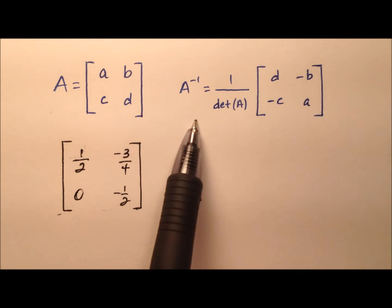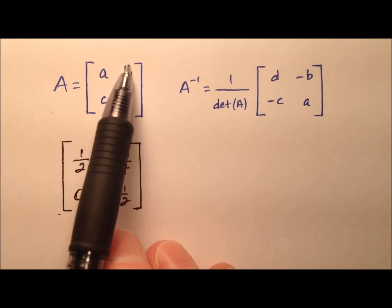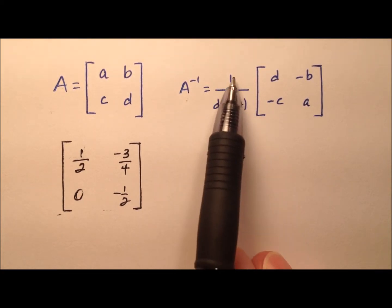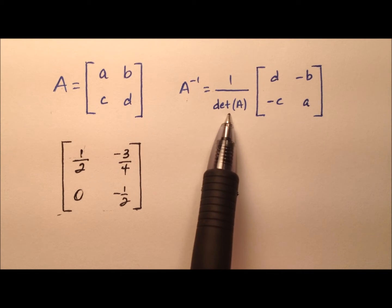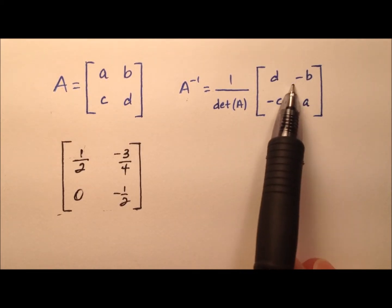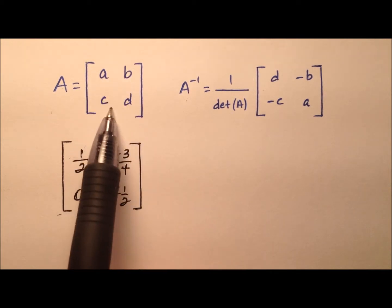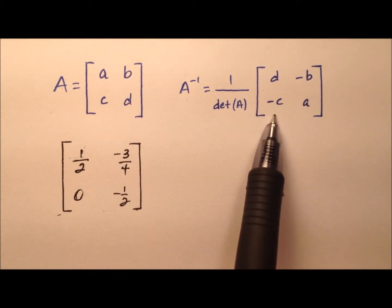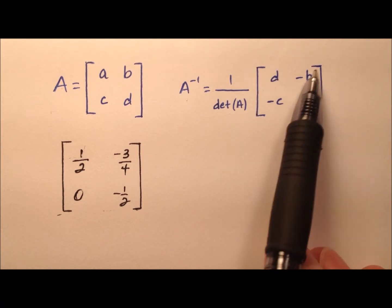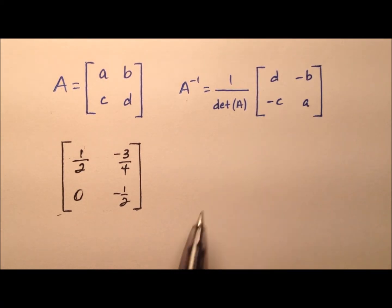In general, when we have some matrix A that's going to be a 2 by 2 square matrix, we can find its inverse, which is notated this way, by taking 1 over the determinant of our matrix A and then multiplying it by this 2 by 2. Basically, we're taking the same entries and just doing a little manipulation with them. We're switching the order of this main diagonal and switching the signs on the entries in this minor diagonal.